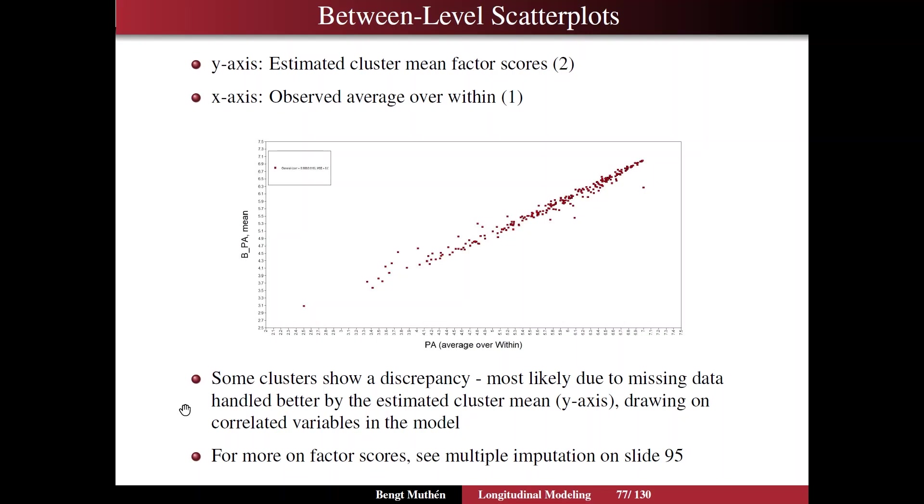In a bigger model, you would draw on information from other correlated variables in the model to do a good job for estimating the cluster mean factor scores. I say more about the estimation of factor scores on slide 95 in the context of multiple imputations, which is an interesting topic that I find quite a lot of practical uses for. And some of them are going to be shown in this talk, and some are going to be shown in the future DSEM talk.